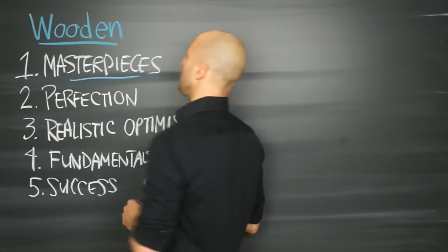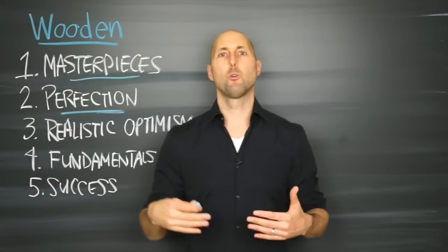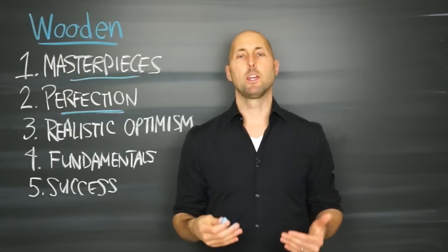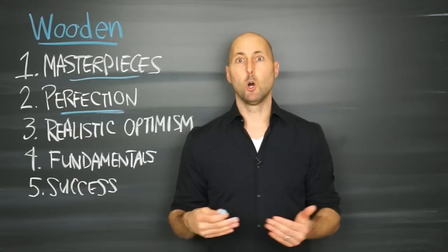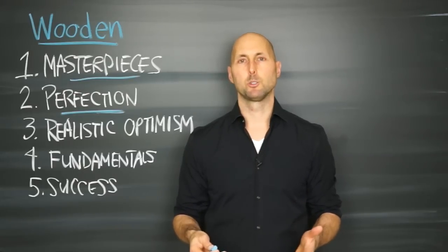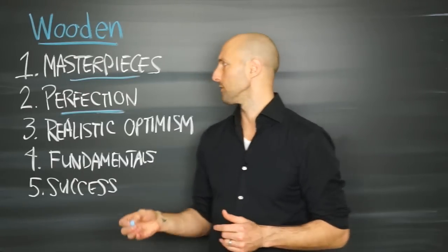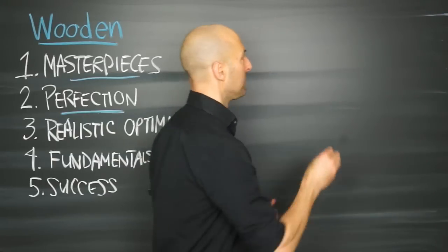Big idea number two is perfection. So John tells us you want to go for perfection knowing it's impossible to attain. Yeah, go for it, but know that it's impossible to attain. That's really cool. Tal Ben-Shahar talks about this. We're going to reflect on this and these two ideas. You want to become an optimalist.